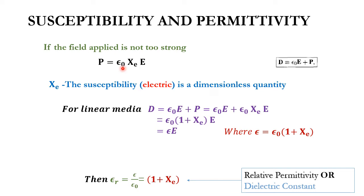This equation holds for a linear medium. For a non-linear medium, polarization includes higher order terms: E plus E² plus E³ plus higher order powers of E. For a linear medium, we only keep the linear term.